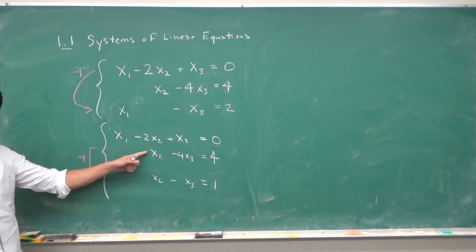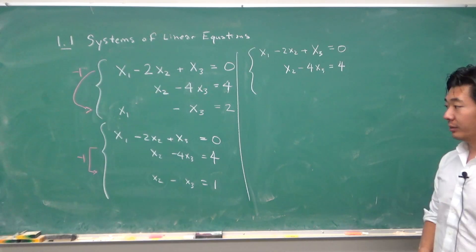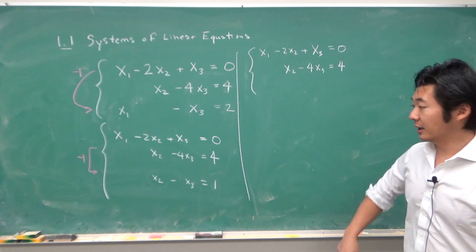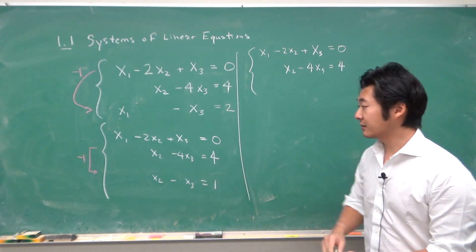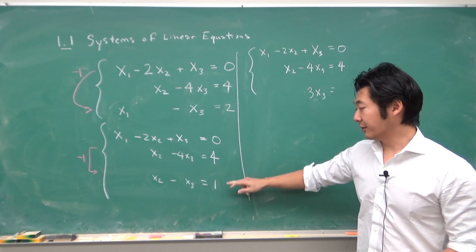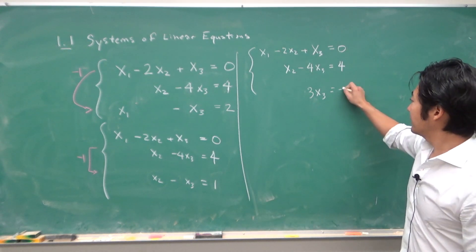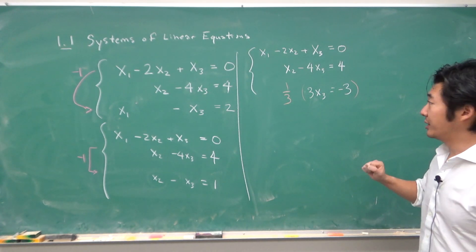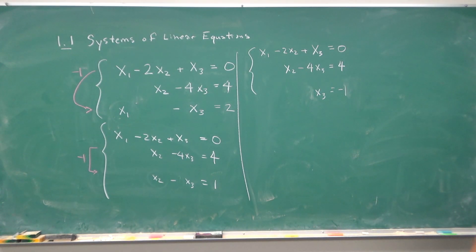So we can do that by multiplying this by negative 1 and adding it into here. So when we do that we will get x2 minus x2 is 0 and then we have negative x3 plus 4 is going to be 3x3 equals minus 4 plus 1 is minus 3. We can divide by 3. When we do that our equation will become this. So x3 is negative 1.